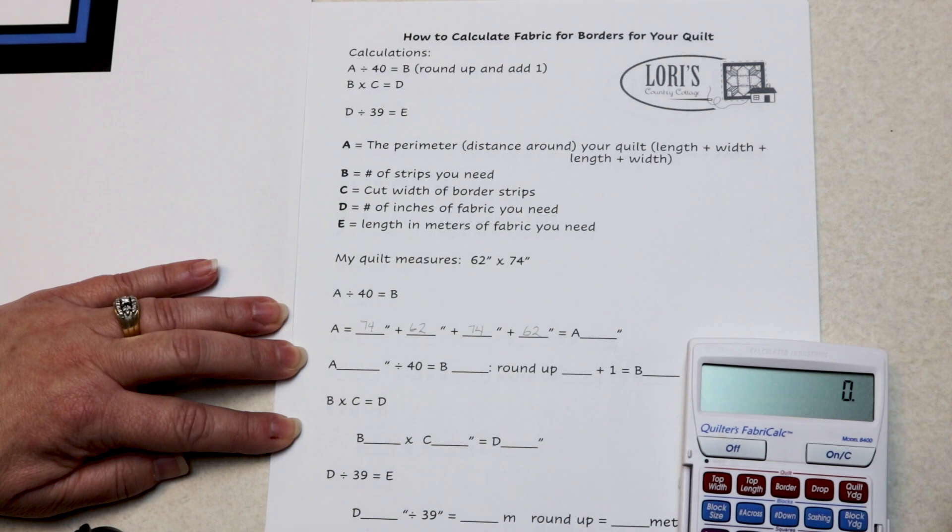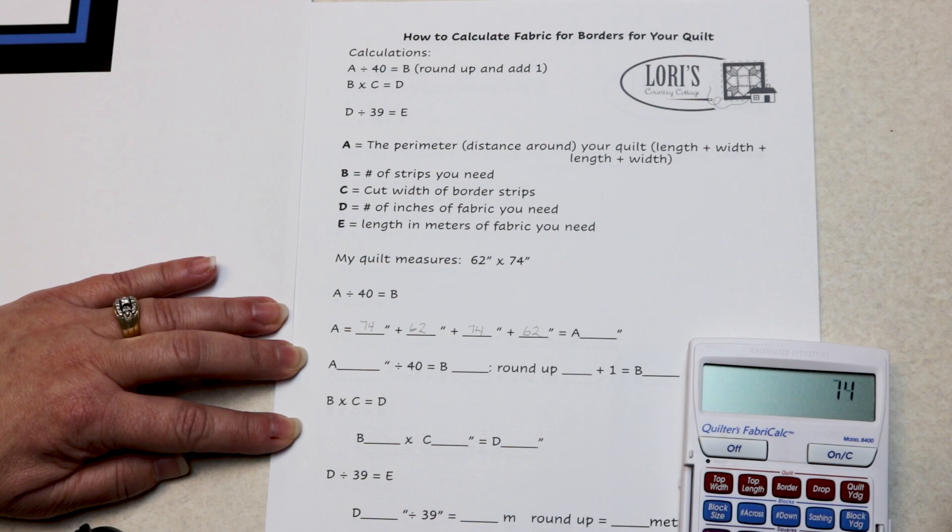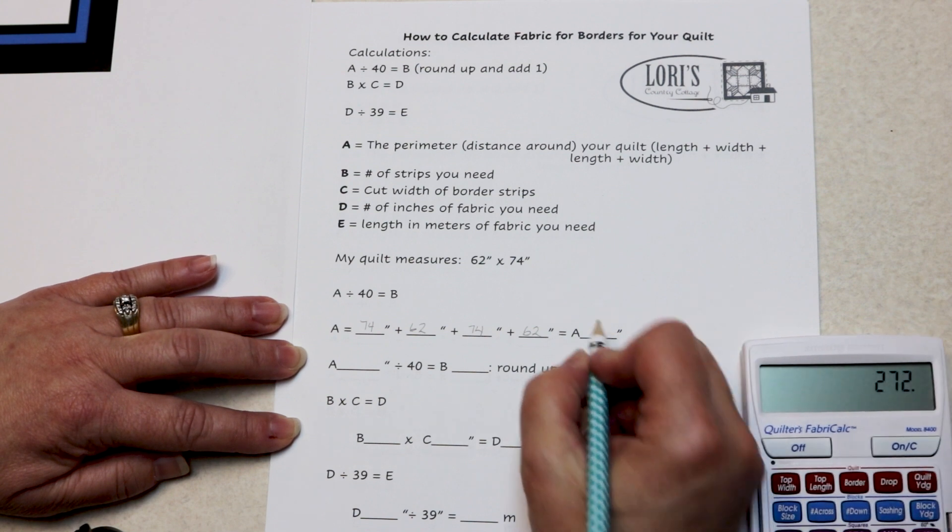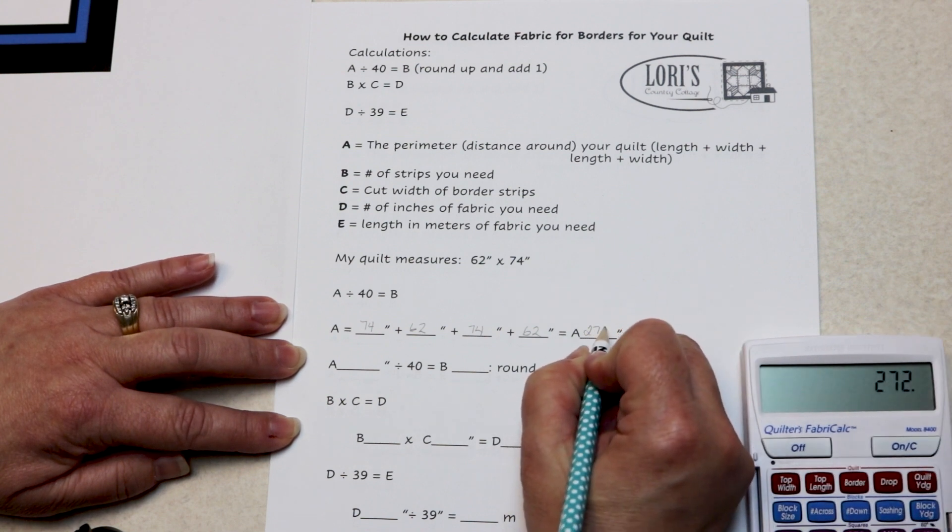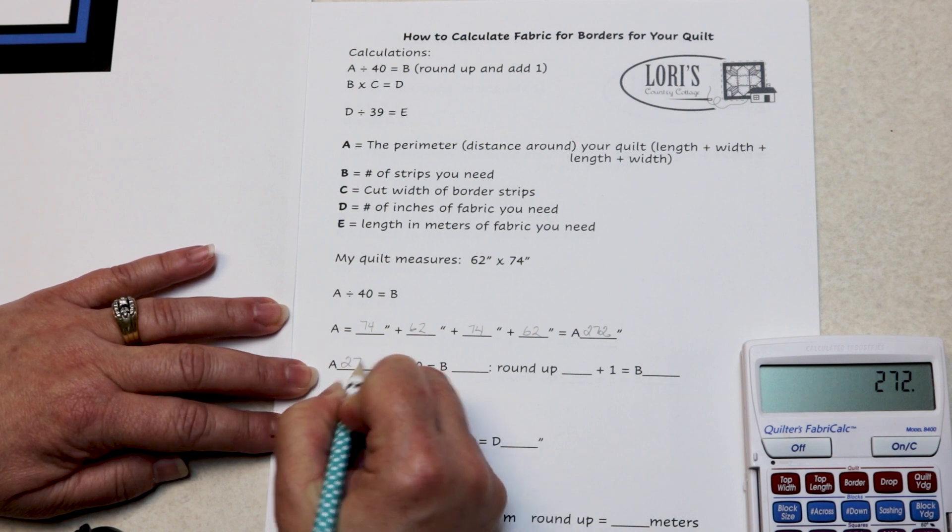I never do math in my head. 74 plus 62 plus 74 plus 62 is 272 inches around my quilt. A is 272.